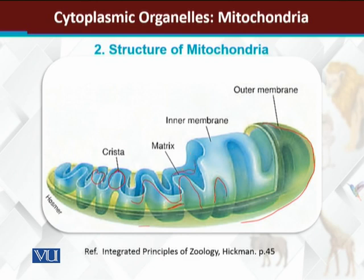This is the cristae. This is the mitochondrial matrix. This is the overall structure of mitochondria. Ribosomes and DNA are small molecules that we cannot show diagrammatically.